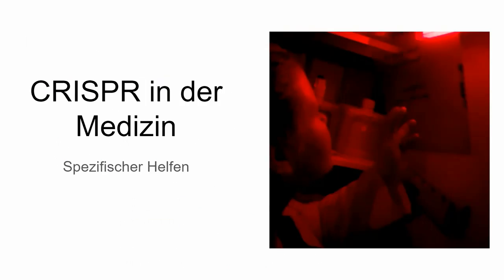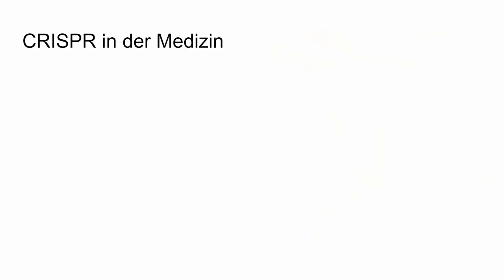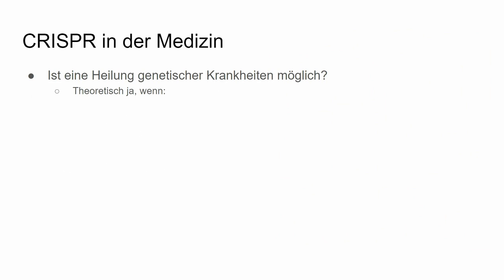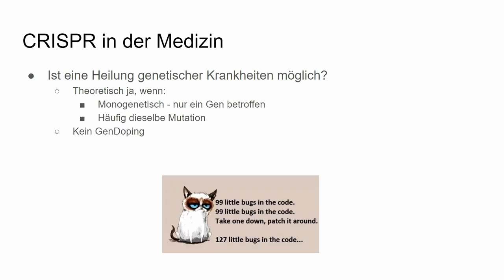CRISPR makes basic research a lot faster and more precise. Now CRISPR in medicine — the big question is, can we cure genetic diseases? Theoretically yes, if the disease is monogenetic, meaning it's caused by only one gene, and if it's often the same mutation causing it. Gene doping doesn't work because the effects usually involve many genes, so it's very difficult to handle and not really practicable.